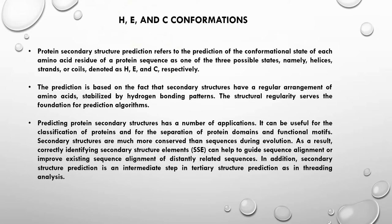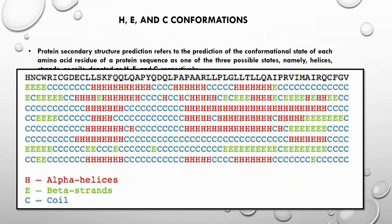In addition, secondary structure prediction is an intermediate step in tertiary structure prediction, such as in threading analysis, which will be covered in another video. The output is not fancy — it is a textual output. E stands for strand, C for coil, H for helix. The sequence shown in black is the query sequence, and the remaining lines are the predictions for that sequence. This is how the prediction output looks.